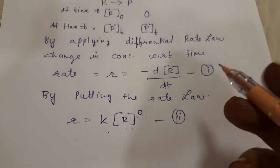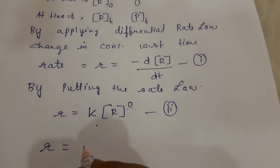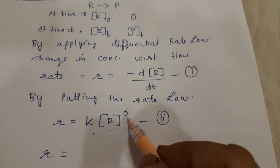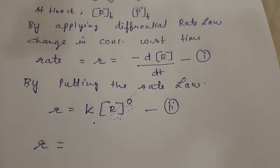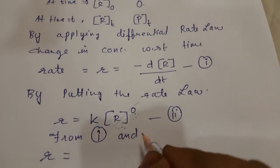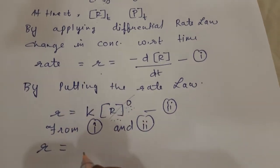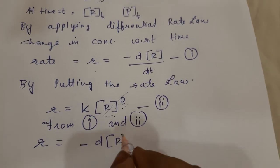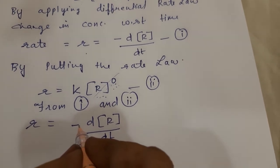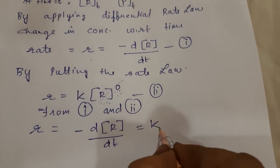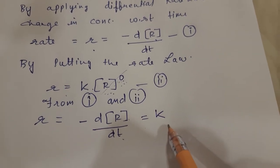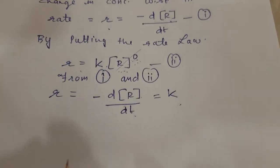By combining both equations, R = K·[R]⁰ = K·1 = K. And from equation 1, R = -dR/dt. So combining equations 1 and 2: -dR/dt = K. Anything raised to zero is 1, so the rate equals the rate constant K for a zero order reaction.